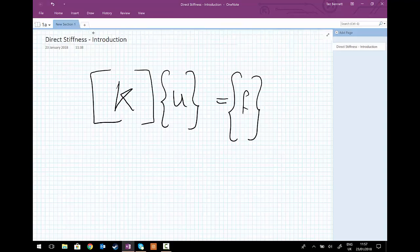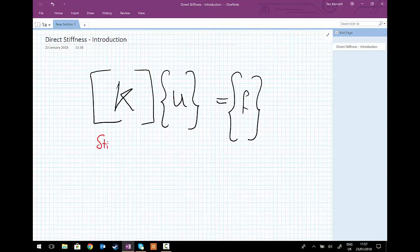Let's just write that down. We've got the stiffness, multiplied by displacement, equals force. And this is a well-known equation in a scalar format but now we're extending the ideas into a matrix format.